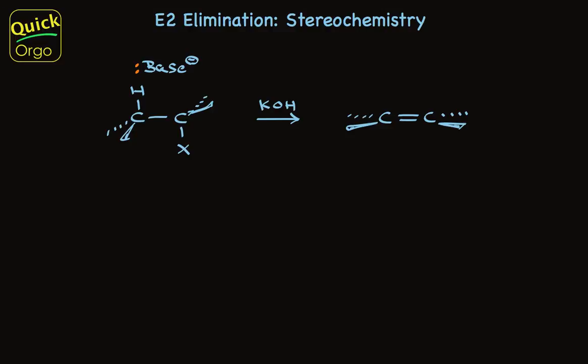Treating an alkyl halide with base creates an alkene. This is a 1,2 elimination reaction. Hydrogen and halide are removed from adjacent carbons to make the pi bond.